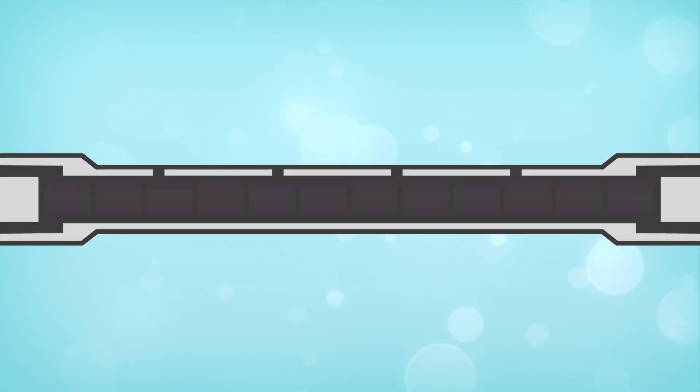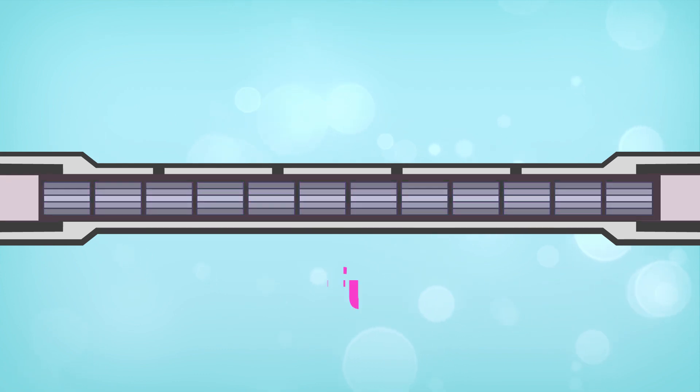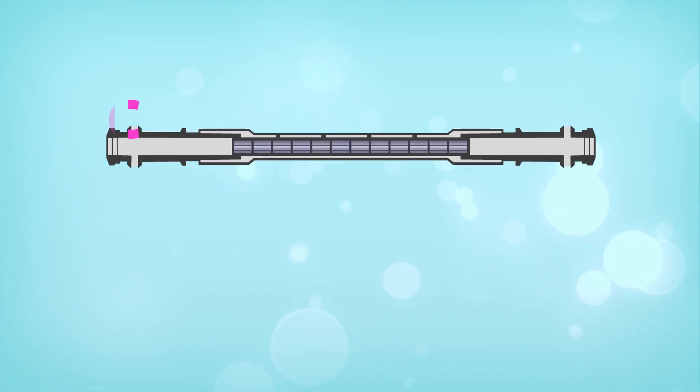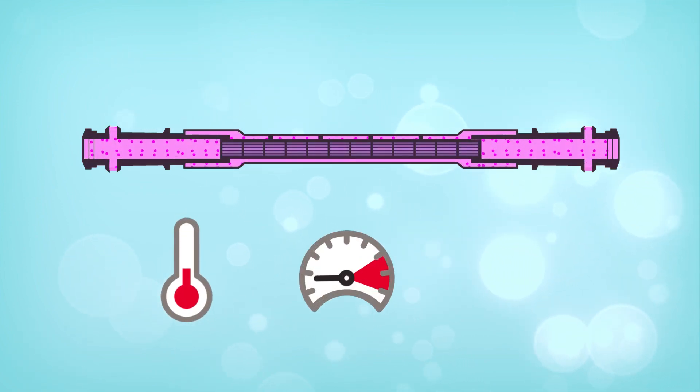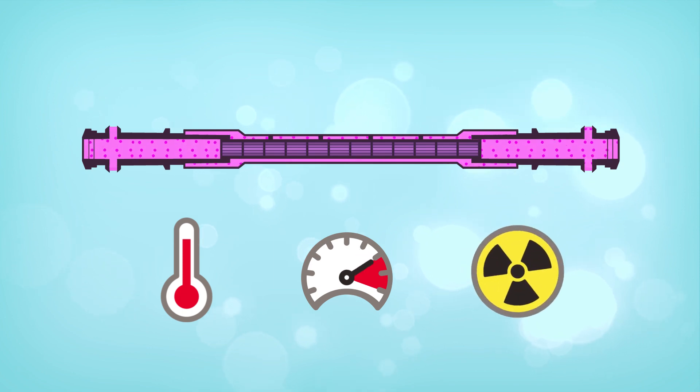Pressure tubes are the heart of the reactor. They are used to contain the fuel bundles and coolant. During regular nuclear power plant operation, pressure tubes are exposed to high temperatures, high pressure, and intense radiation, which can cause them to deteriorate.